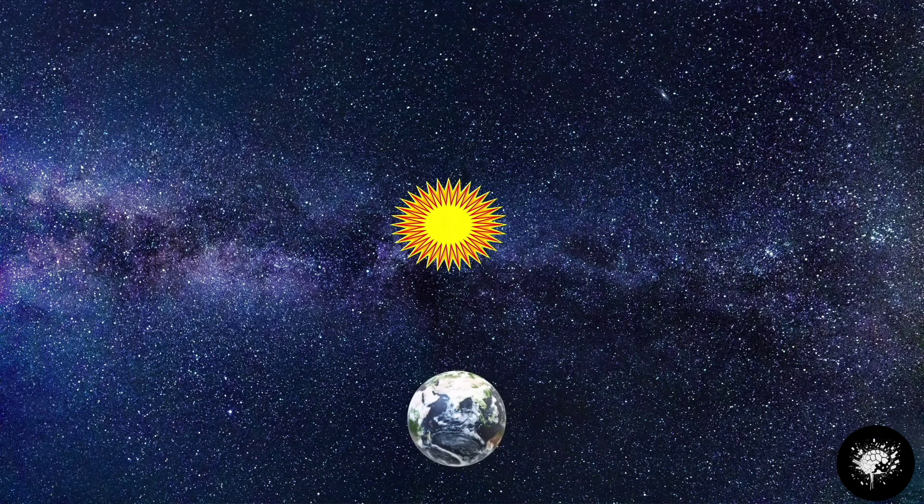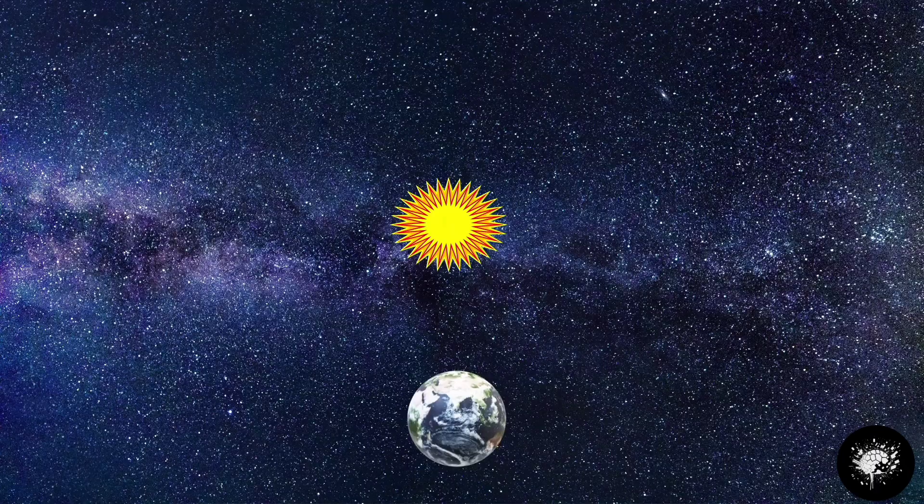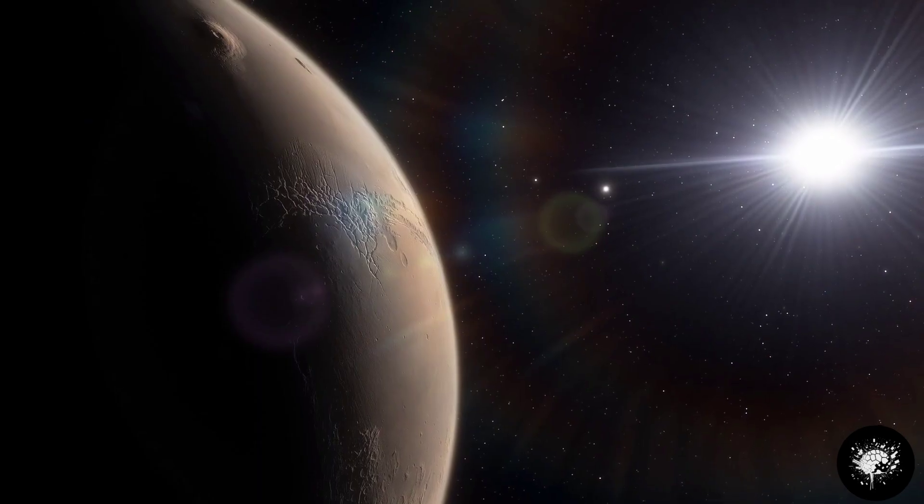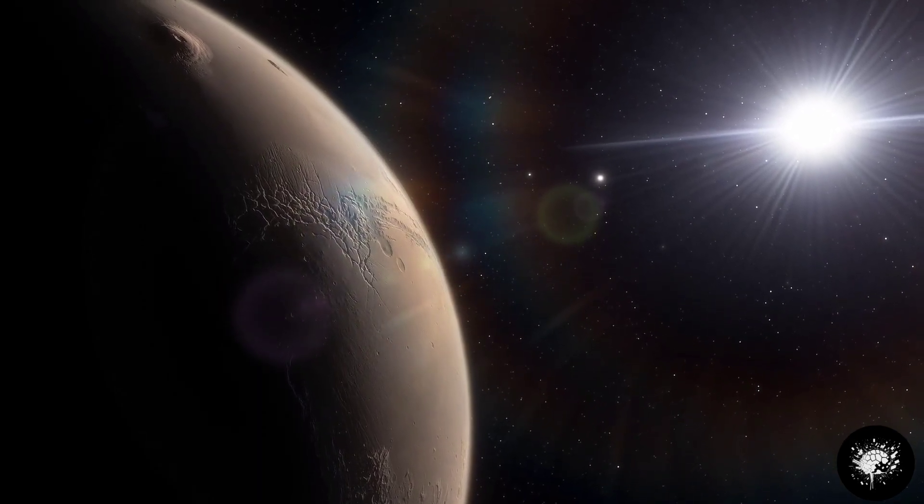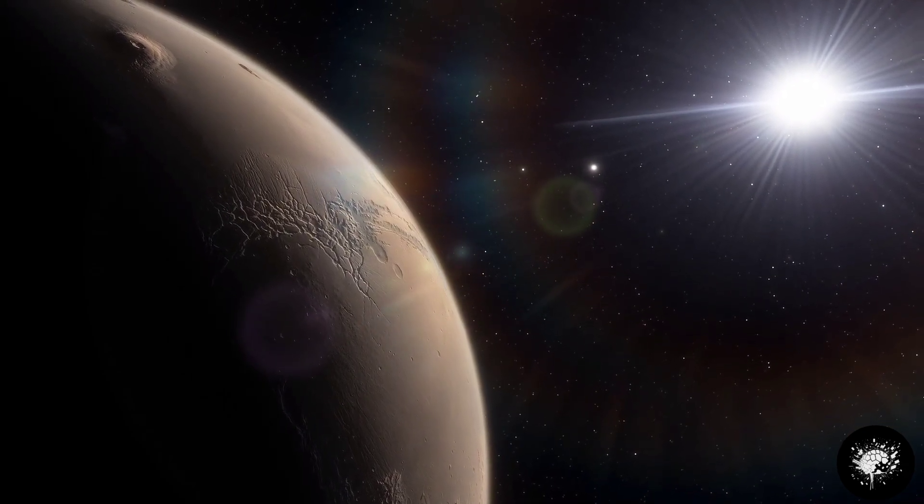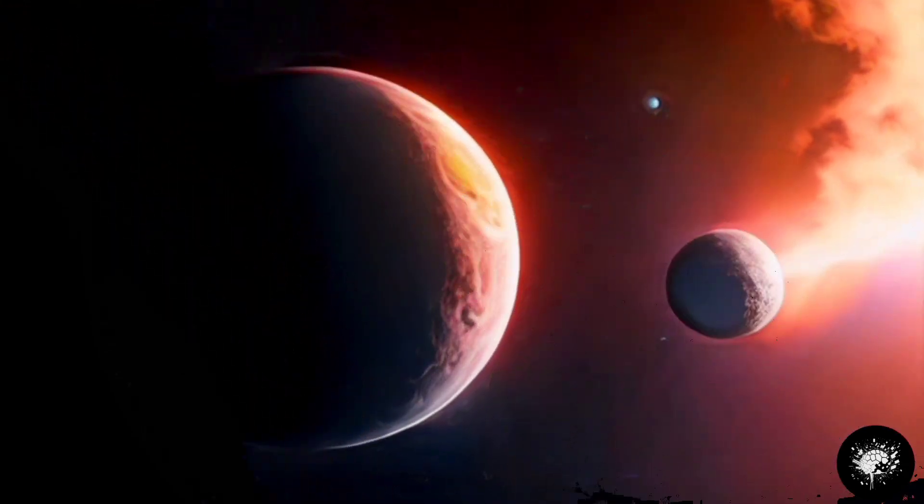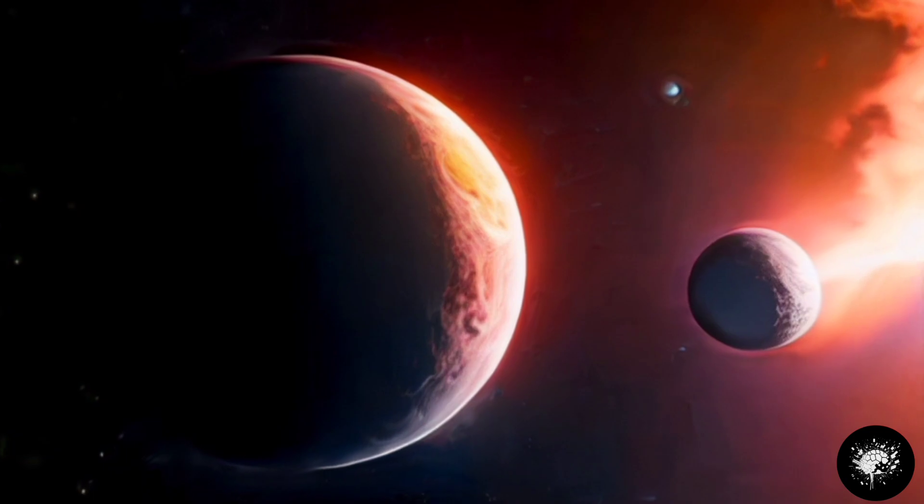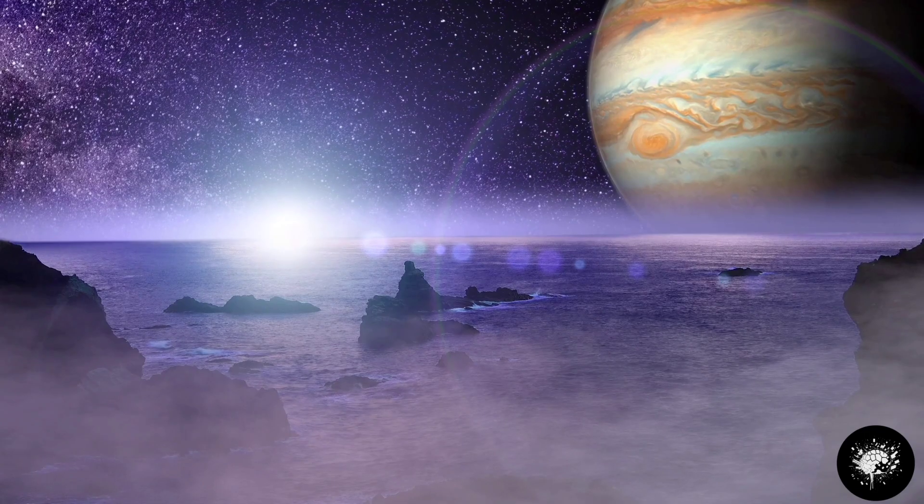If the Earth were to depart from its orbit around the Sun and head towards Jupiter, the journey would begin. Our planet typically orbits the Sun at a speed of about 30 kilometers per second. Assuming it maintains the same pace on its journey to Jupiter, it would take approximately 241 days to reach the giant planet.